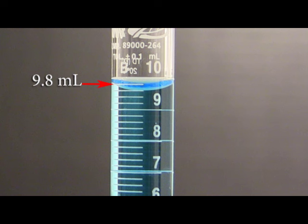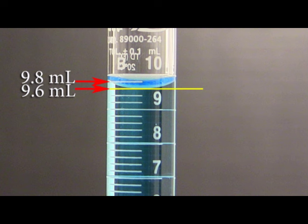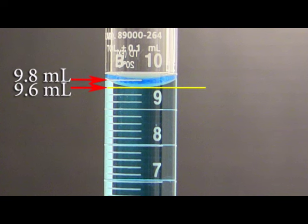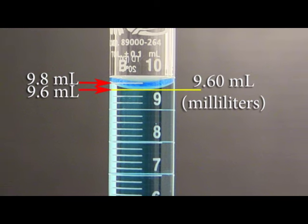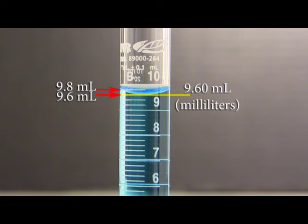Determine the value of the gradation mark just above and below the meniscus on the graduated cylinder. Visualize a line at the bottom of the meniscus. Estimate where the line is in relation to the gradation marks above and below in order to determine the value for your measurement. We would read this measurement as 9.60 milliliters.